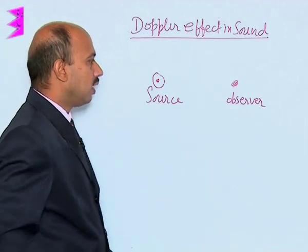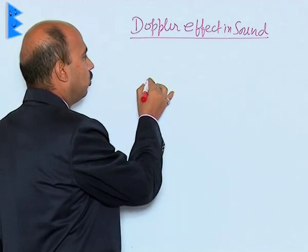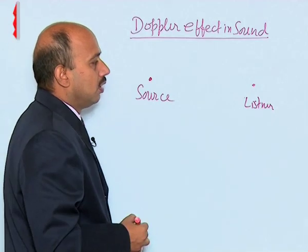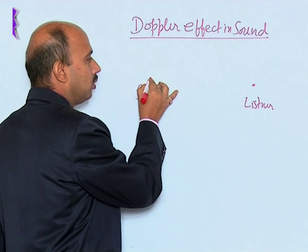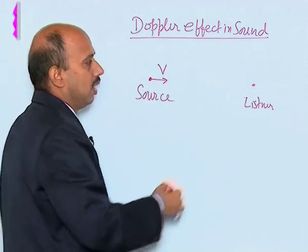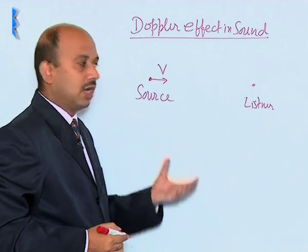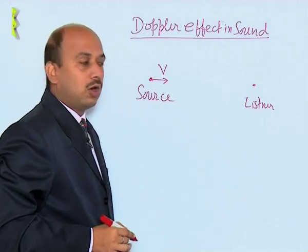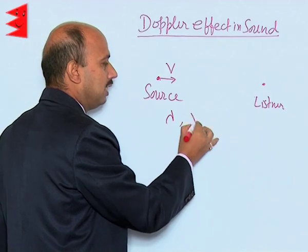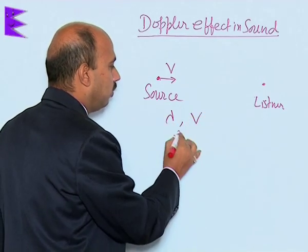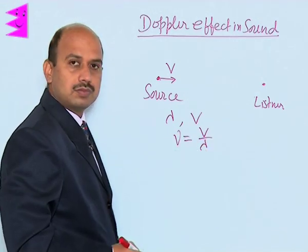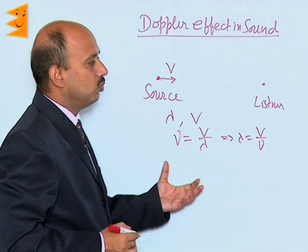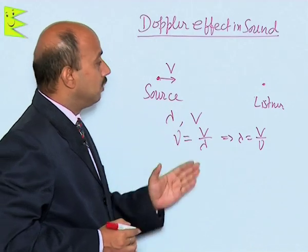Suppose this is the source and here is the observer — let us call them listener. In this case, the source is producing sound of speed v, and we are assuming the medium is at rest, and both source and listener are initially at rest. Then the frequency heard by the listener is ν = v/λ, or λ = v/ν. Here ν is the frequency produced by the source and it is heard by the listener with no motion of medium or source.